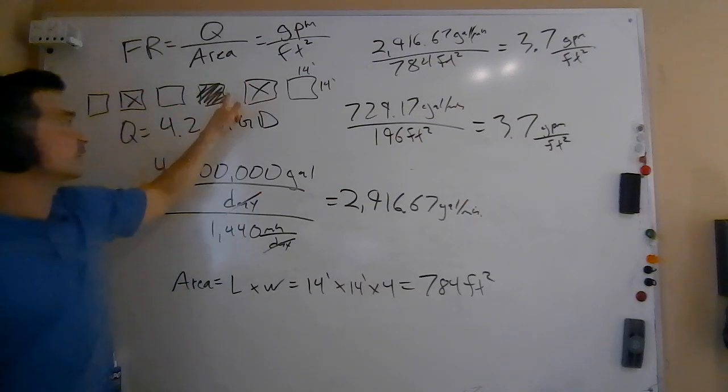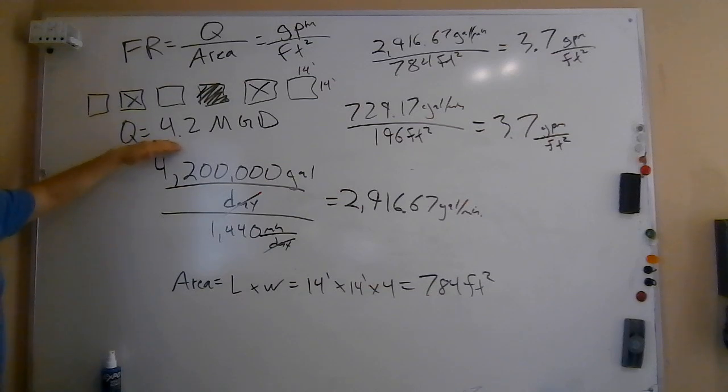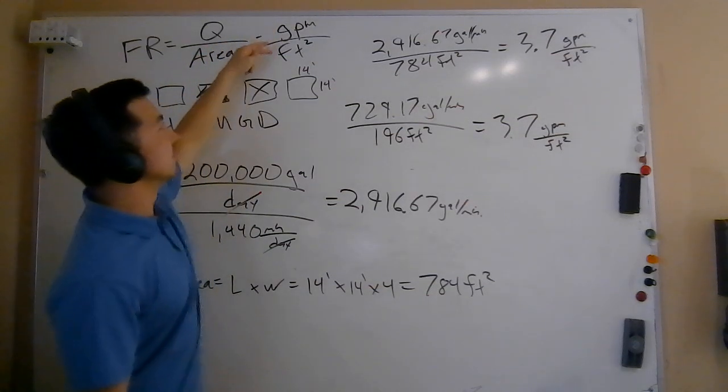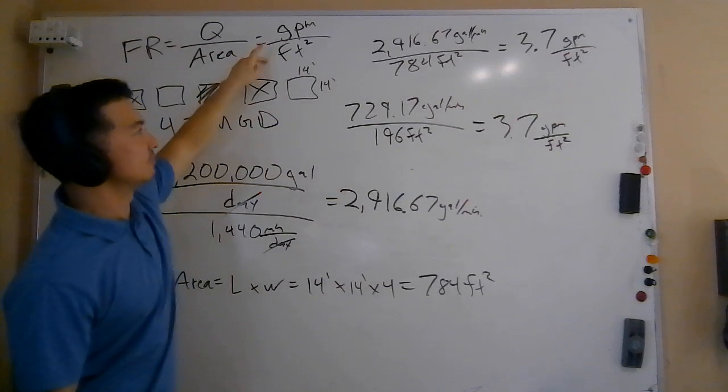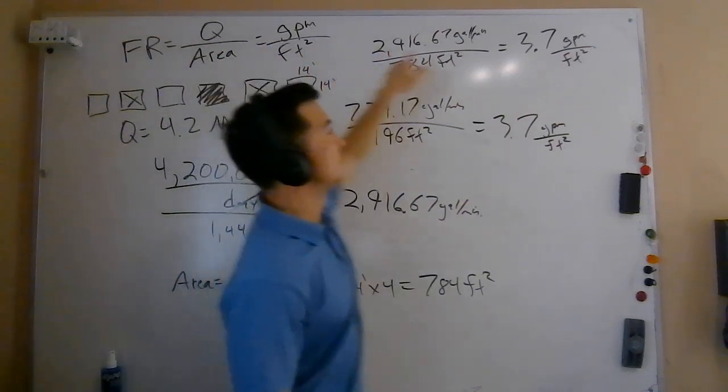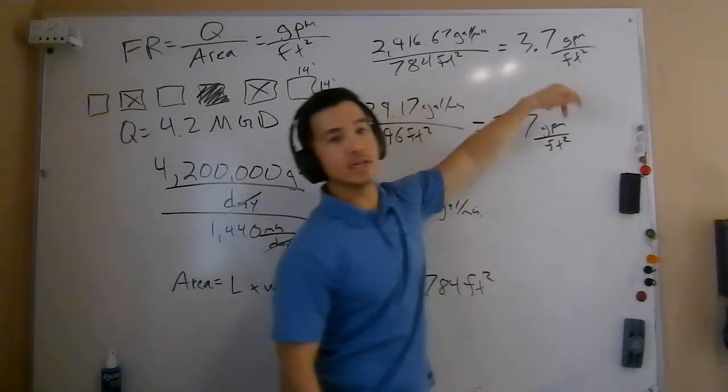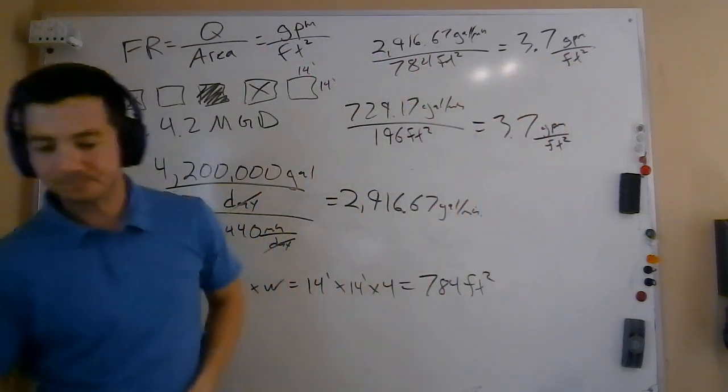Remember that it's these four filters treating the total flow that we're given here. Once we get our flow in the correct units, we got to figure out the area that applies to that flow. Then all we're going to do is divide the two to get to our filtration rate. In this case, 3.7 GPM.